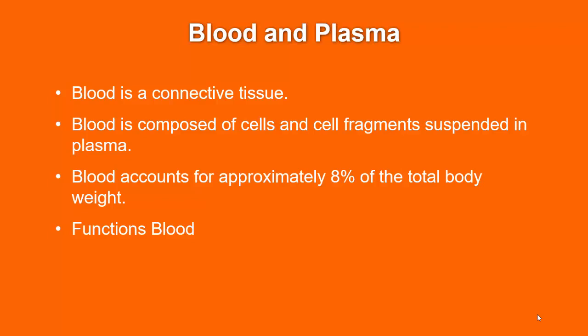Blood also regulates body temperature, regulates pH through buffering components, keeps fluid and electrolytes balanced through sodium and plasma proteins, regulates the immune system through the actions of white blood cells and antibodies, and forms clots through the action of platelets.